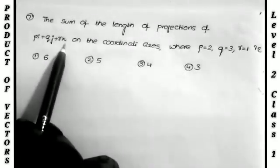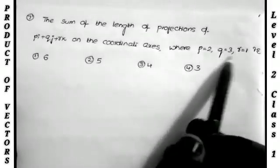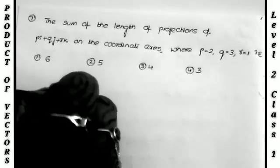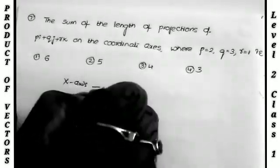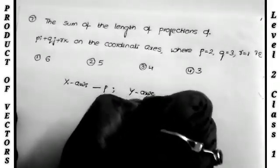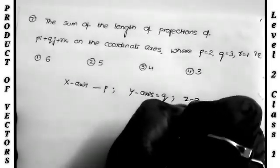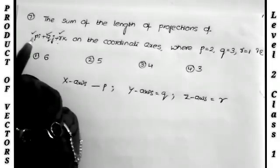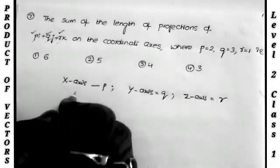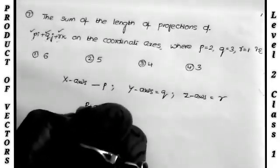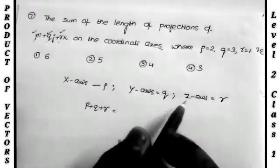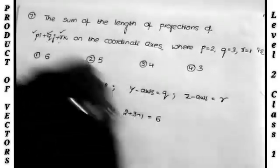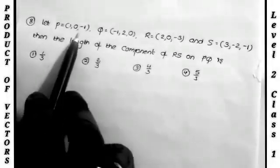Next: for the vector pi + qj + rk with p = 2, q = 3, r = 1, find the sum of the lengths of the projections on the coordinate axes. The projection length on the x-axis is p, on the y-axis is q, and on the z-axis is r. So the sum = p + q + r = 2 + 3 + 1 = 6, the first option.